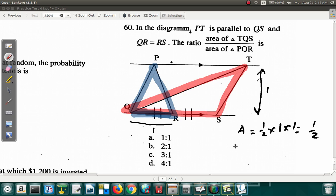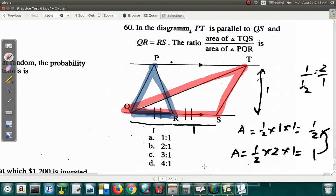Let's look at triangle TQS. The bigger triangle, the area is half times the base. It's now 2 because you have another one times the height. Same height. Half of 2 is 1. So TQS, the big triangle over the smaller triangle, is 1 over half. 1 over half, which is the same as multiply top and bottom by 2. 2 over 1. It's 2 to 1. Question 60, the answer is B.